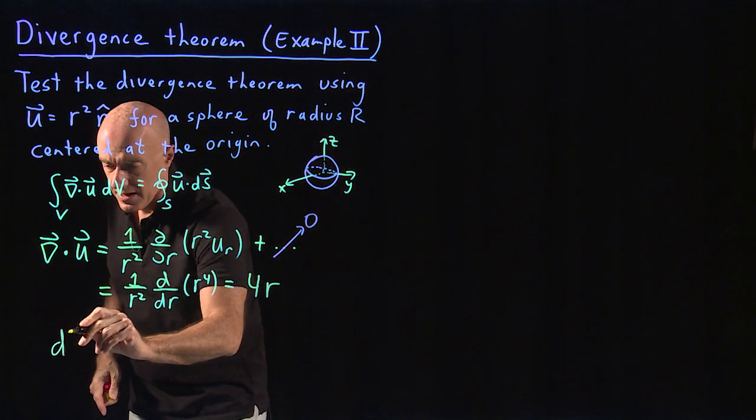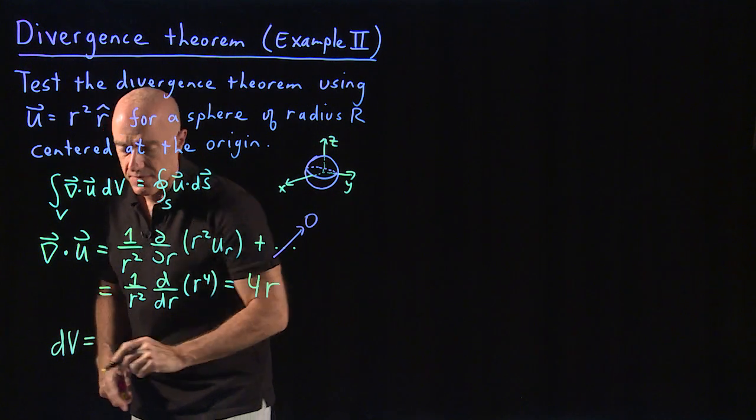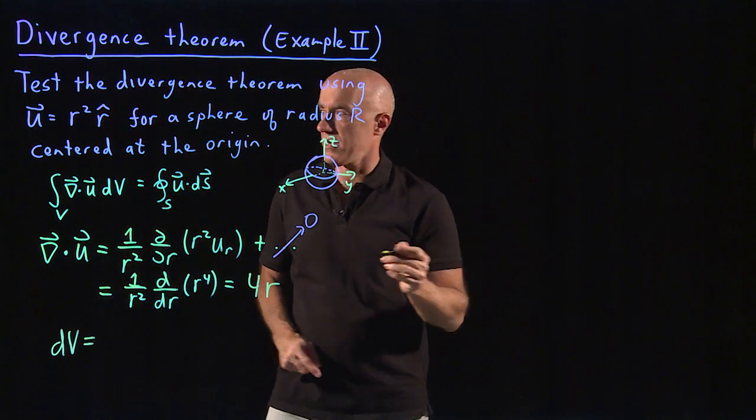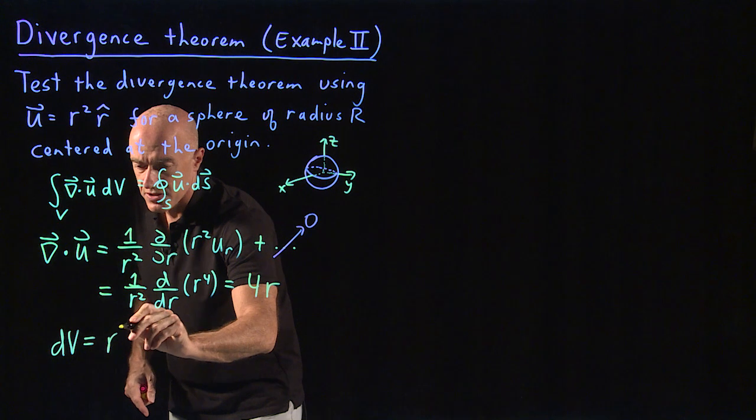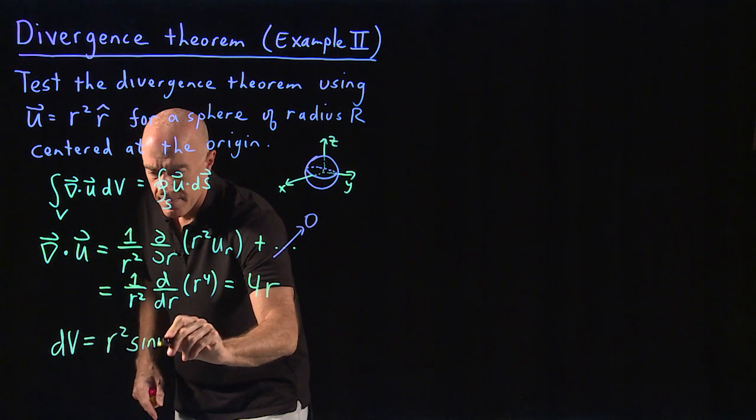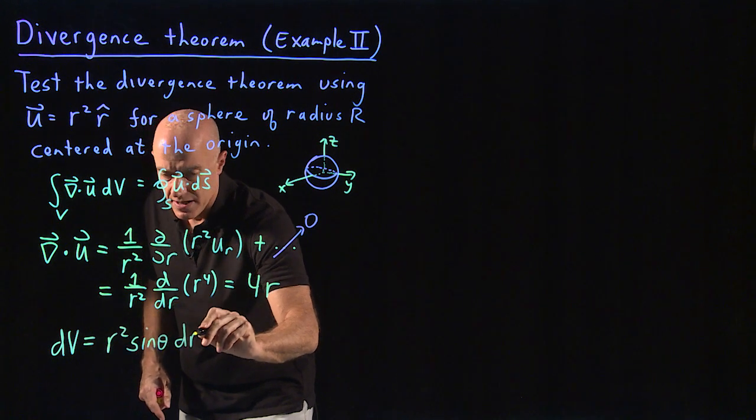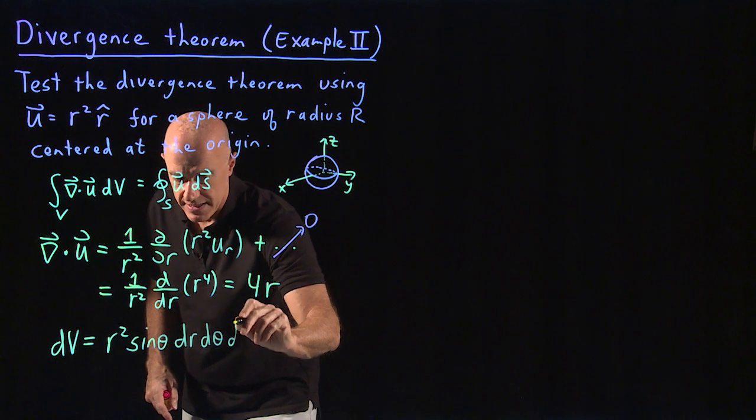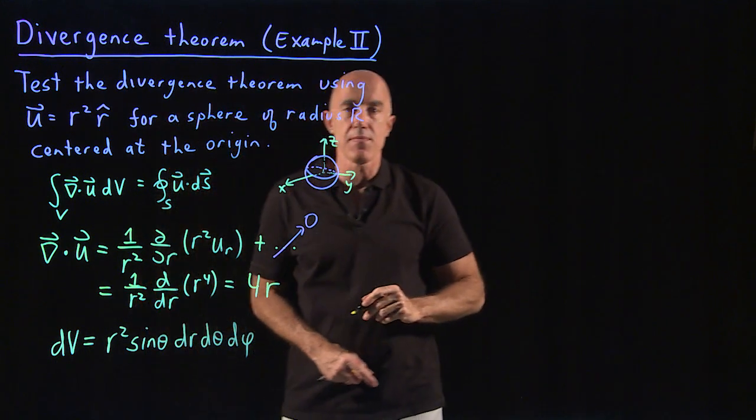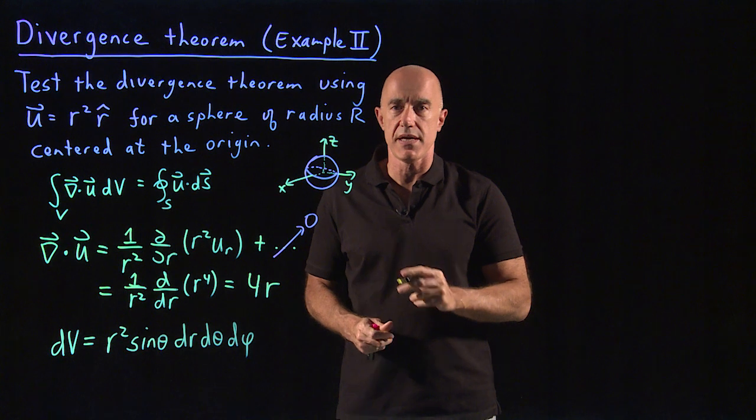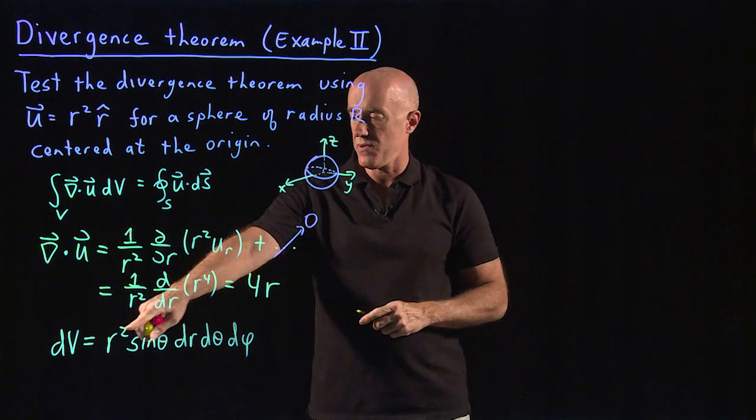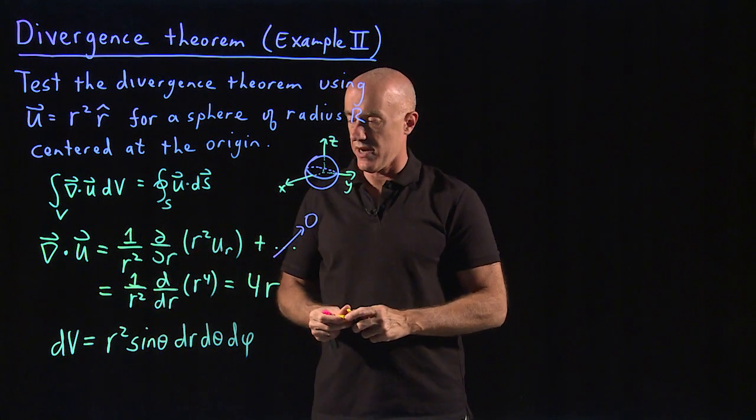dV is our volume element in spherical coordinates. So that's r squared sine theta dr dθ dφ. Remember that's coming from the Jacobian of the change of variables. The Jacobian is r squared sine theta.